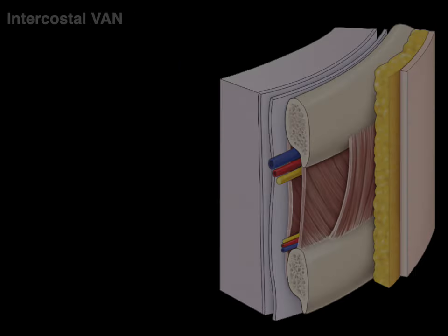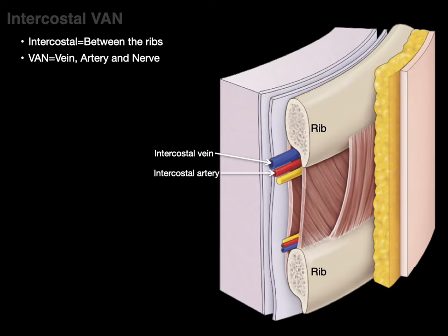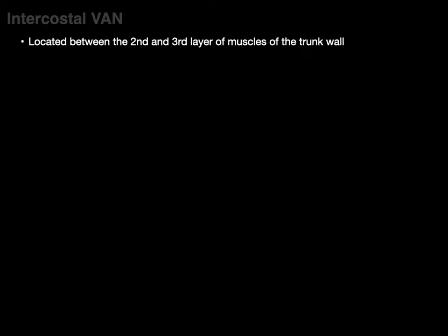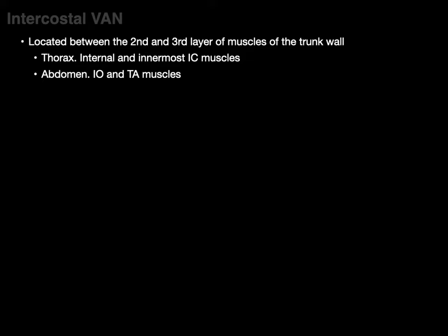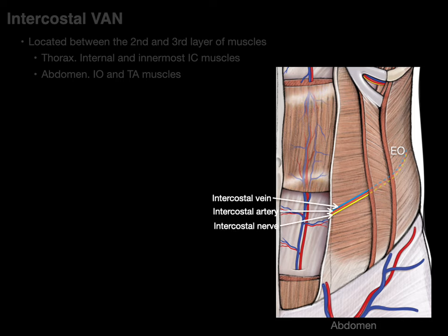Intercostal VAN stands for vein, artery, and nerve — structures coursing between the ribs. The term 'intercostal' means between the ribs, and 'costal' means rib. They usually course from top to bottom — vein, artery, nerve — and at the bottom of the intercostal space there are collateral intercostal vessels. The intercostal VAN courses between the second and third layer of muscles: in the thorax, between the internal and innermost intercostals; in the abdomen, between the internal oblique and transverse abdominus muscles.